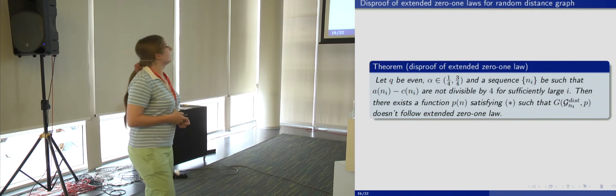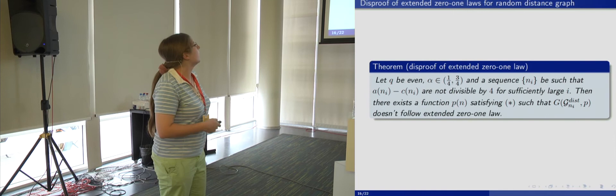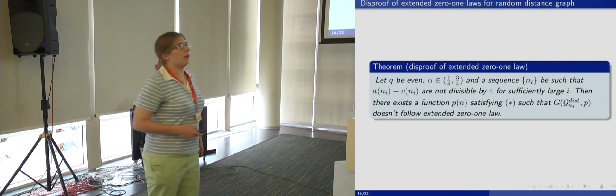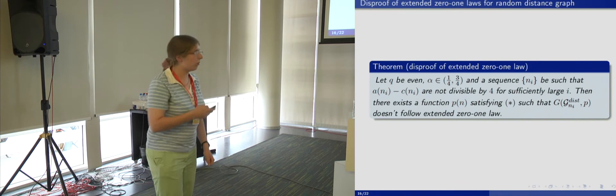So the situation with the 0,1 law for random distance graphs is much worse than for G(N,P). These are the main results. Now I'd like to tell you about the proof.